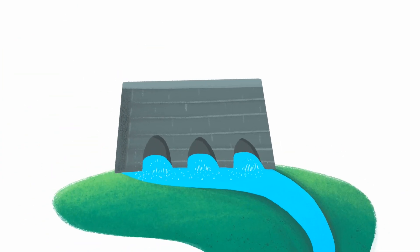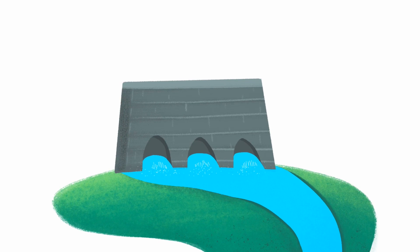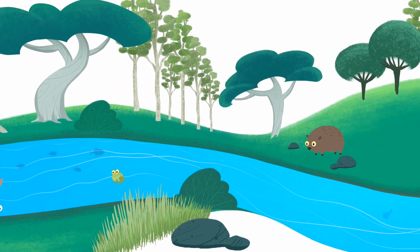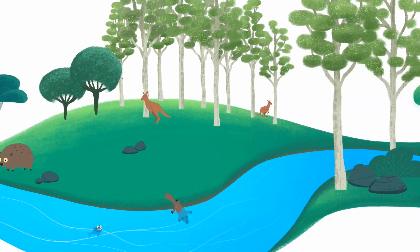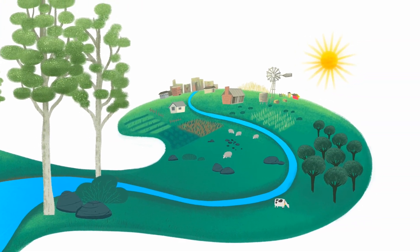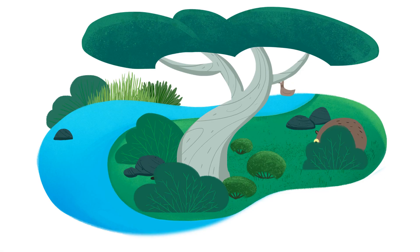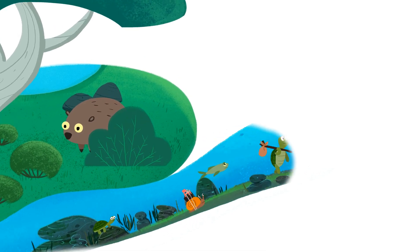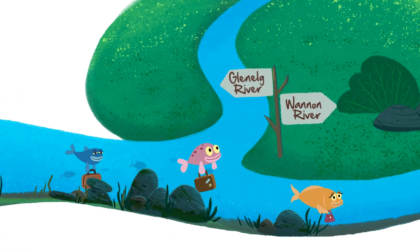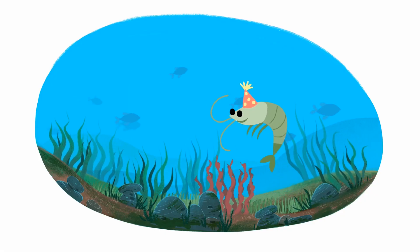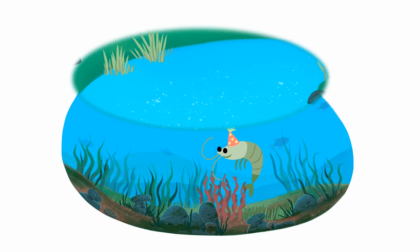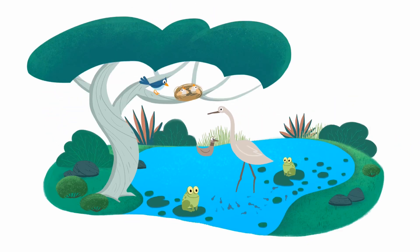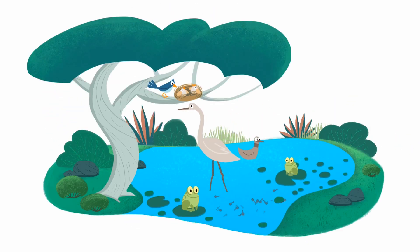We're helping by releasing environmental flows from our dams into our rivers and wetlands. This provides shelter for animals during drought, encourages fish to move and breed, helps river and wetland plants grow, providing homes for fish and water bugs.